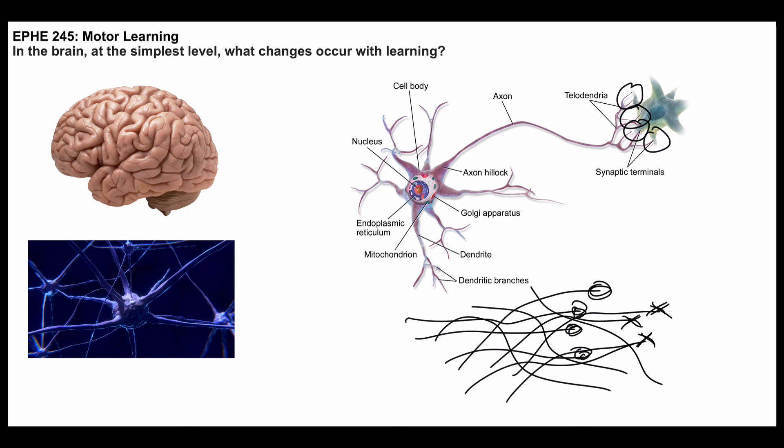In the brain, at the simplest level, what changes occur with learning? You have strengthening of neural synapses, and that forms a memory, and that is what you have learned.